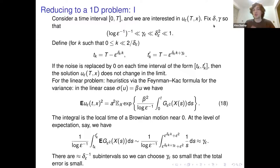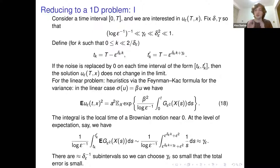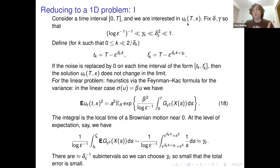We fix parameters delta and gamma — small parameters, with gamma much smaller than delta, both depending on epsilon. We define two sets of time points: t_k = T − ε^{δk + γ} and t_k'. The first key observation is that we can turn off the noise on the intervals from t_k to t_k' and it won't change the solution at the final space-time point in the limit. Turning off the noise means replacing it by zero, so the equation undergoes the usual deterministic heat equation on those intervals.